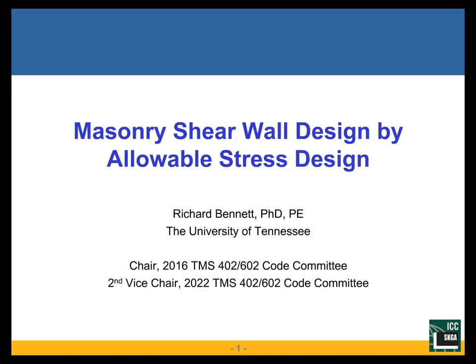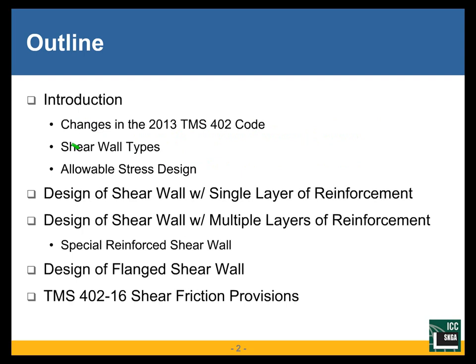We'll look at shear wall design by allowable stress design methods today. Here's a brief outline: we'll look at changes in the 2013 code, shear wall types, a brief review of allowable stress design, then shear wall design with a single layer of reinforcement and with multiple layers or distributed reinforcement. We'll talk about special reinforced shear walls, flanged shear walls, and in the 2016 edition of TMS 402, we also added some shear friction provisions.